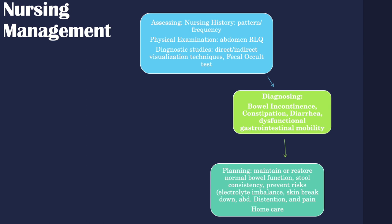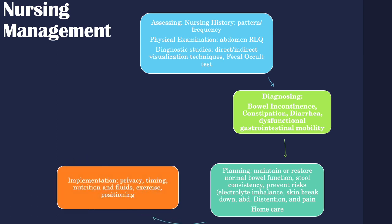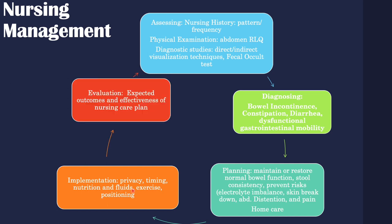Make sure you discuss home care — how the patient will manage their ostomy or any other home care requirements based on their situation, such as encouraging fluids, fiber, and exercise for constipation. When implementing, provide the patient privacy, choose a proper time, and encourage nutrition, fluids, exercise, and proper positioning. Evaluate expected outcomes and the effectiveness of your nursing care plan.